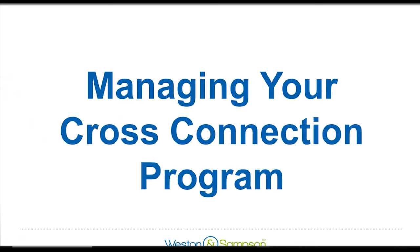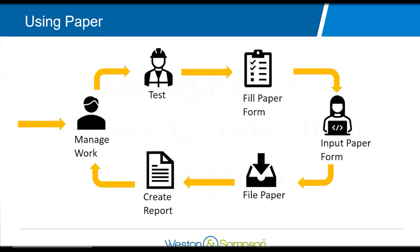Managing the cross-connection program can be done on paper, on Excel, or with software. Currently, if you're using paper, you have someone in the office managing the work — they write out and print papers, give them to the tester, the tester takes them into the field, does the test, fills it out, and then it comes back to the office where someone inputs them into Excel or file cabinets. Then reports are created manually from that data, and the cycle starts again.